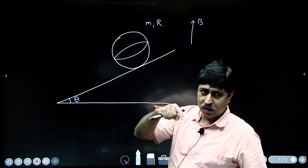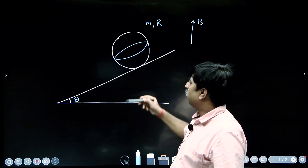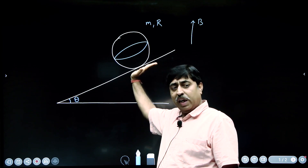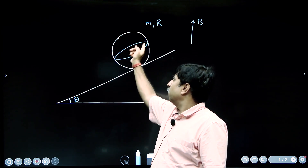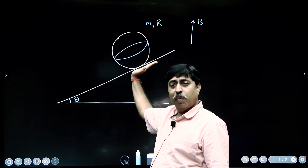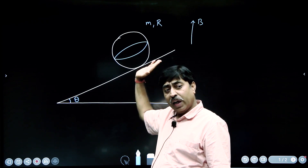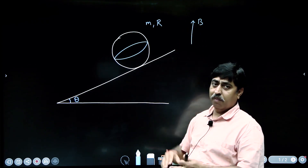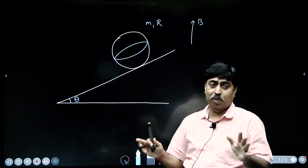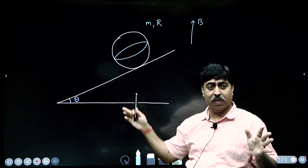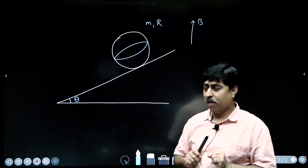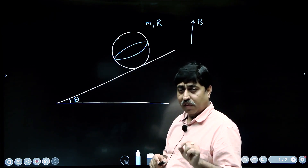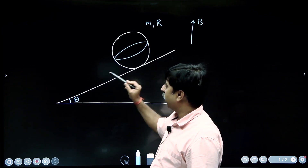The plane of the coil is parallel to the plane of the inclined surface. There is a vertically upward, uniform magnetic field in the entire space.